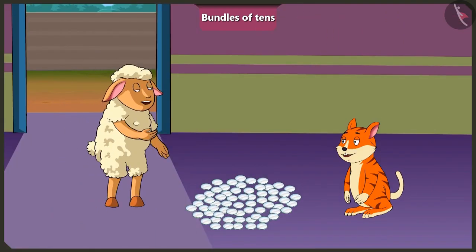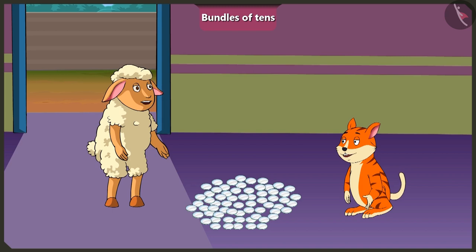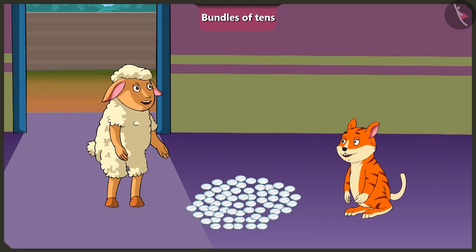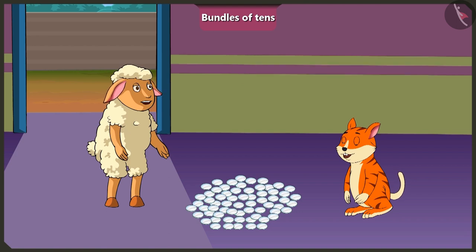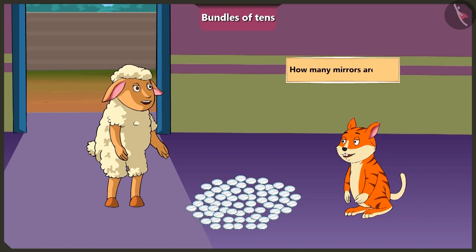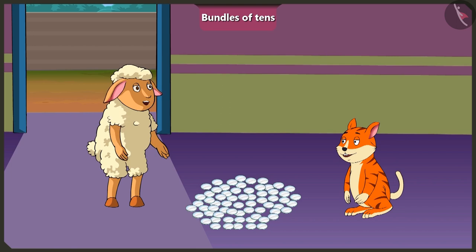Hello, Billy. Did you make your wall piece? No, it is not yet completely ready. I am thinking of sticking some small mirrors too on the wall piece. Billy, can you give me 24 mirrors out of these? Yes, okay. But first tell me, how many mirrors are there in total? I will count them by making groups of 10.